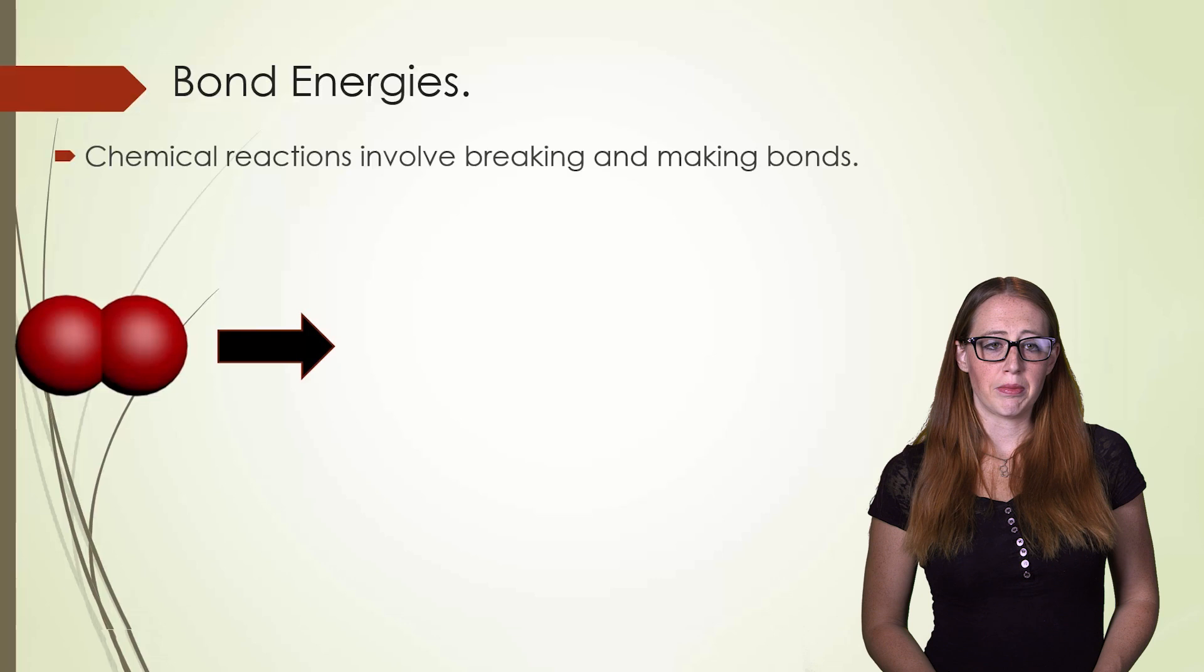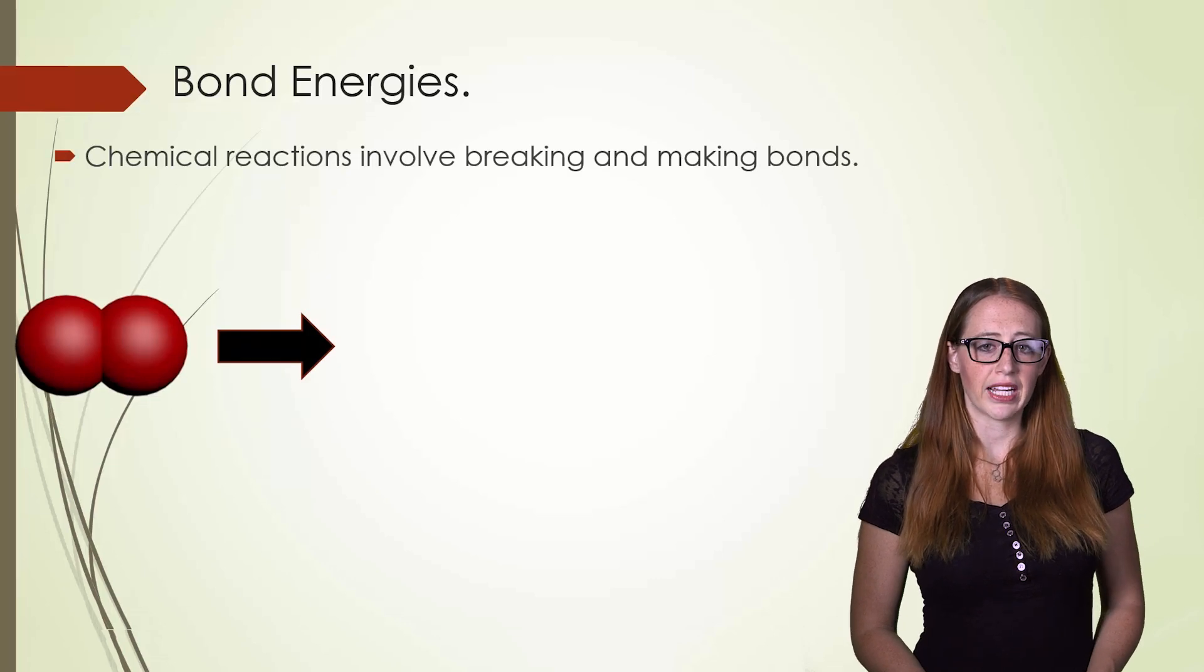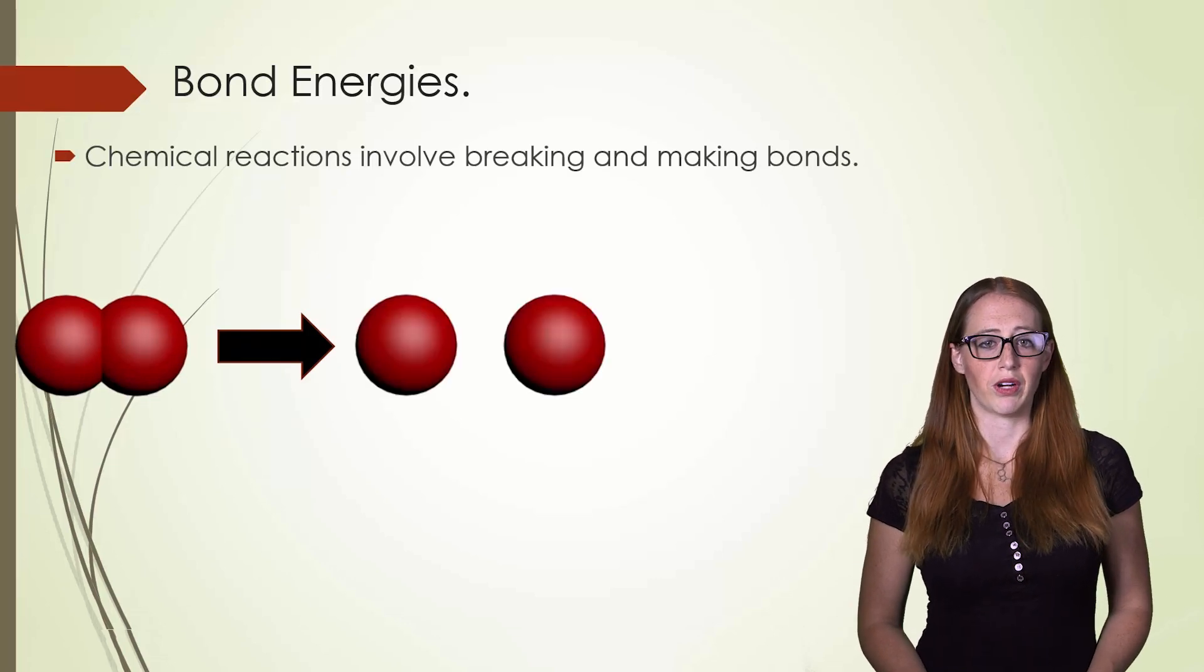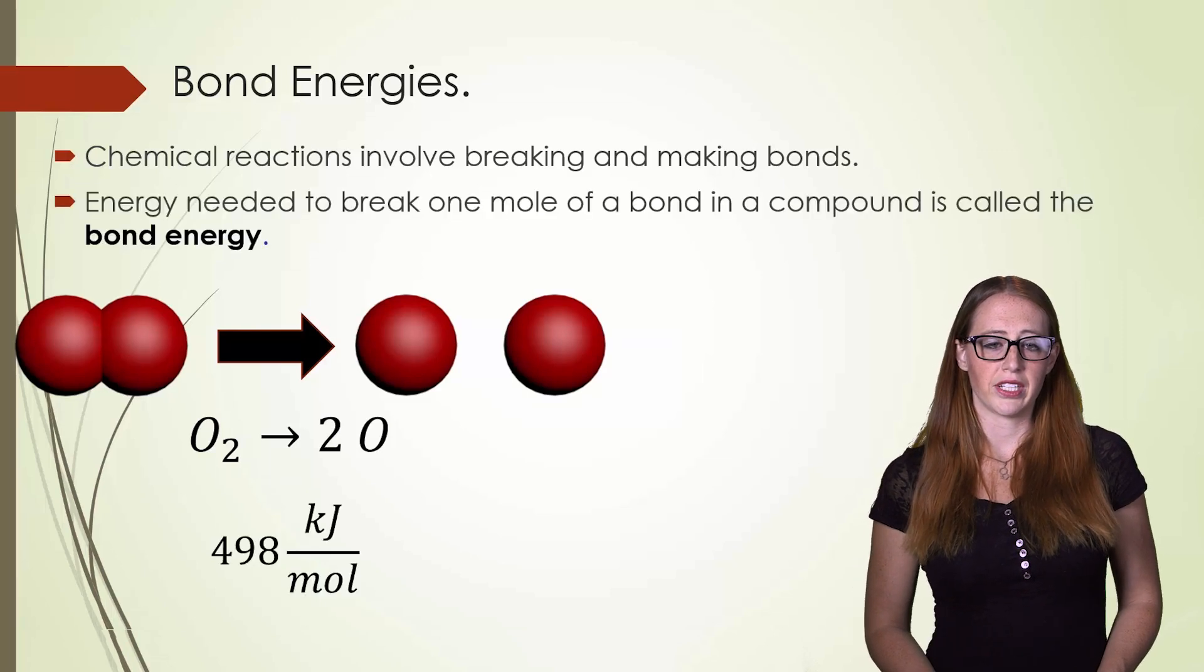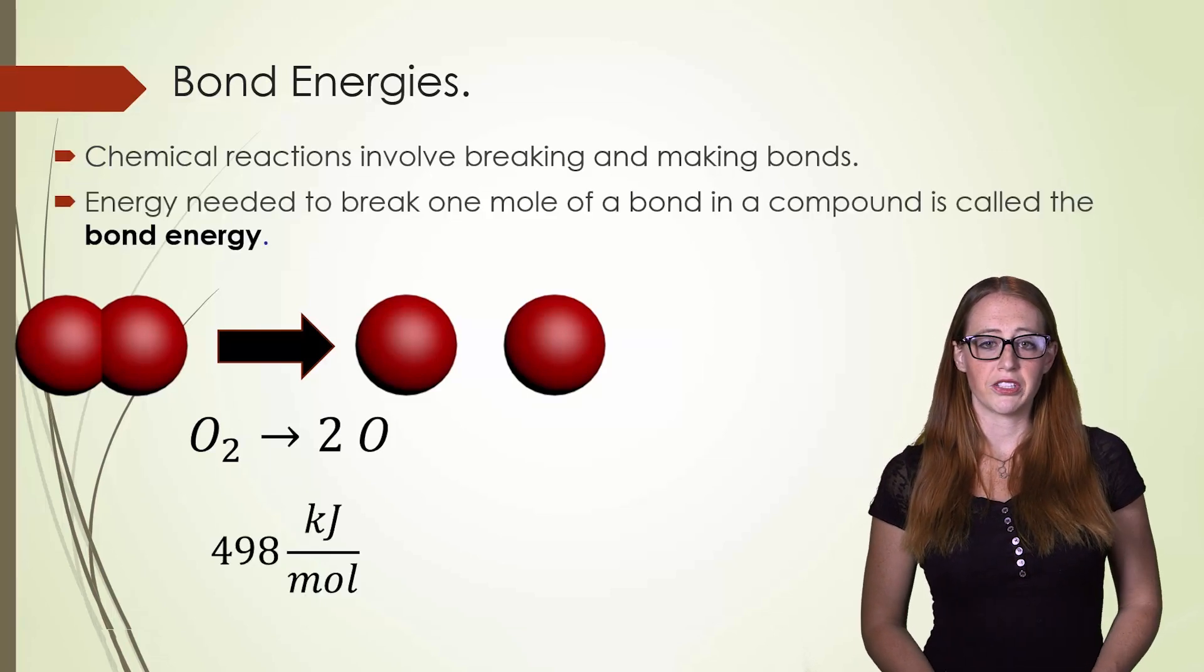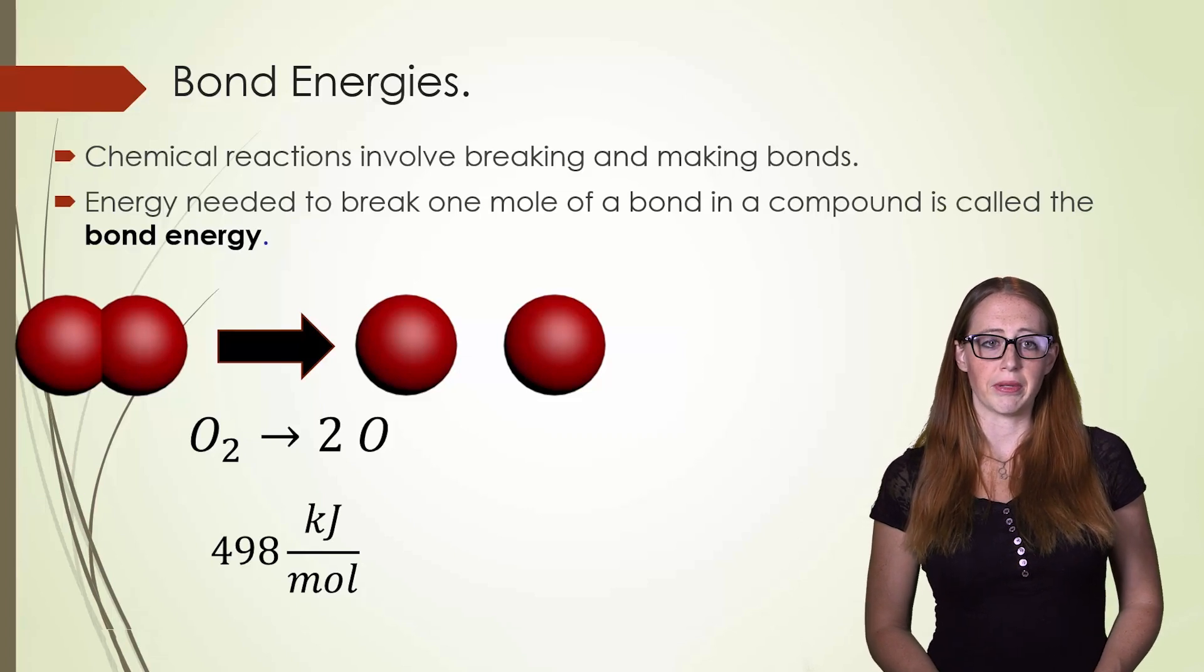For instance, if we break the double bond in oxygen, 498 kilojoules of energy is used for every mole that is broken. This is called the bond energy. By looking at the bond energy of all the bonds broken and formed, we can find an estimation of the enthalpy of reactions.